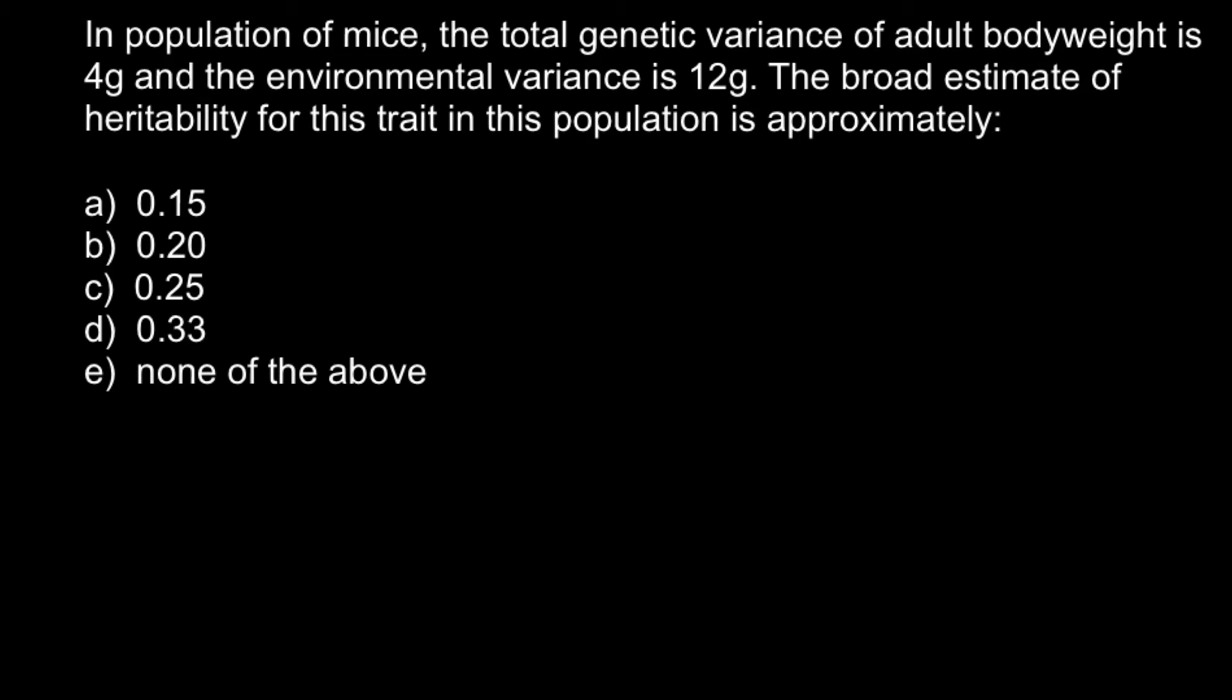Hi, in this video I'm going to talk about quantitative genetics. Today's problem is: in a population of mice, the total genetic variance of adult body weight is 4 grams and the environmental variance is 12 grams.